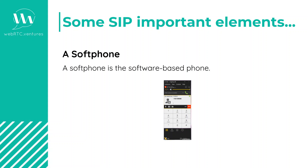What are some of the important SIP elements? One of the SIP elements that we will find is a soft phone. A soft phone is a software-based phone. It can send and receive calls on any hardware device that can run the software. It needs to be registered to a server with the format sip@serverdomain.com. Some examples of open-source soft phones are Linphone or SIP ML5. You can find more information online about those.